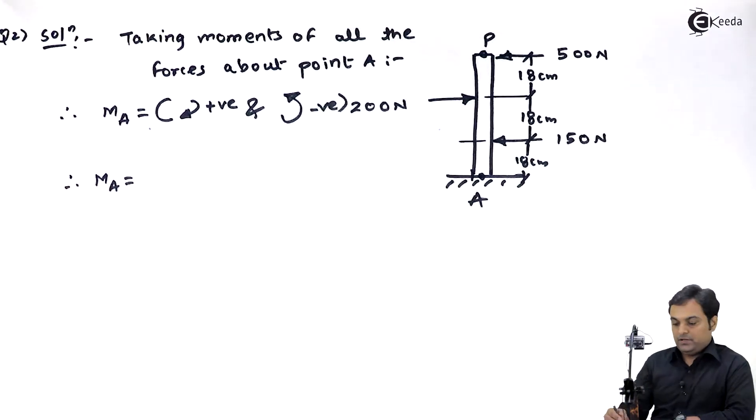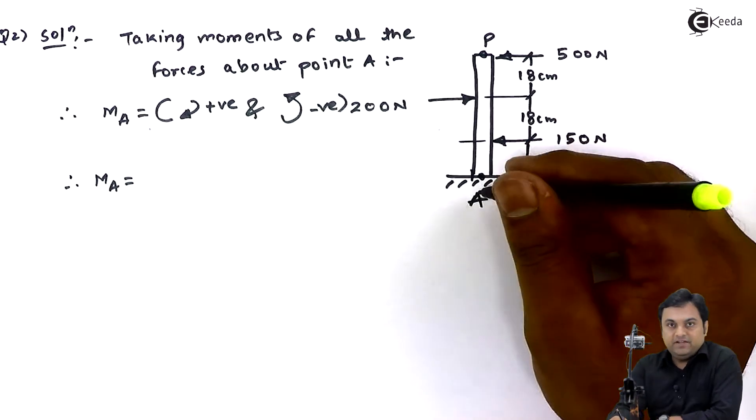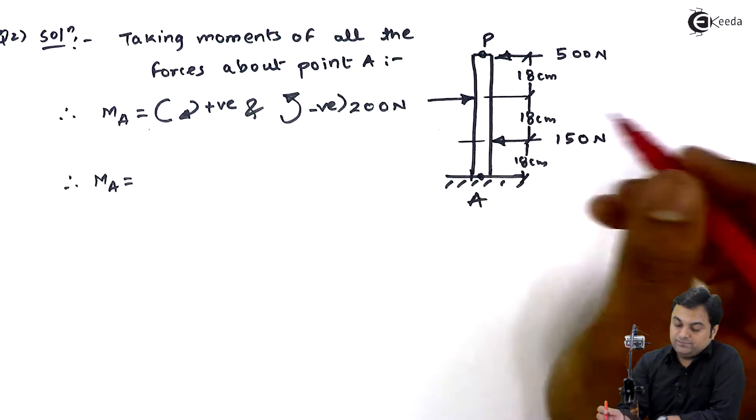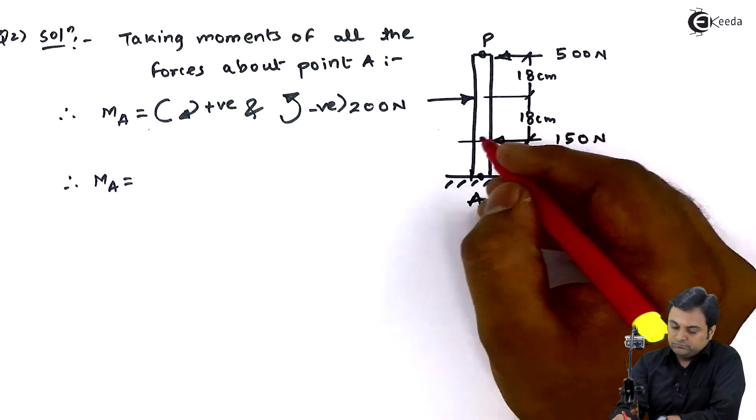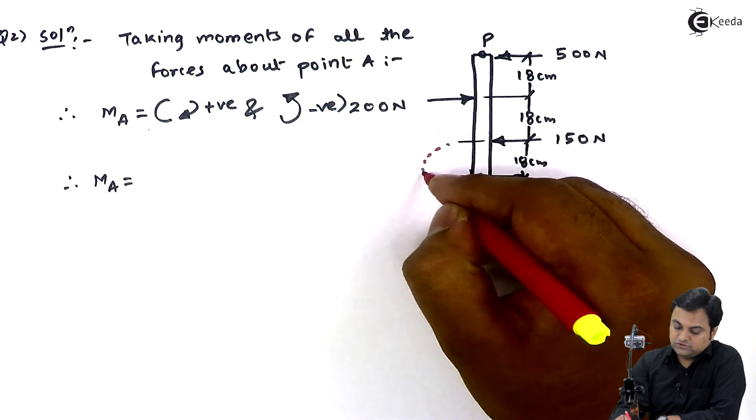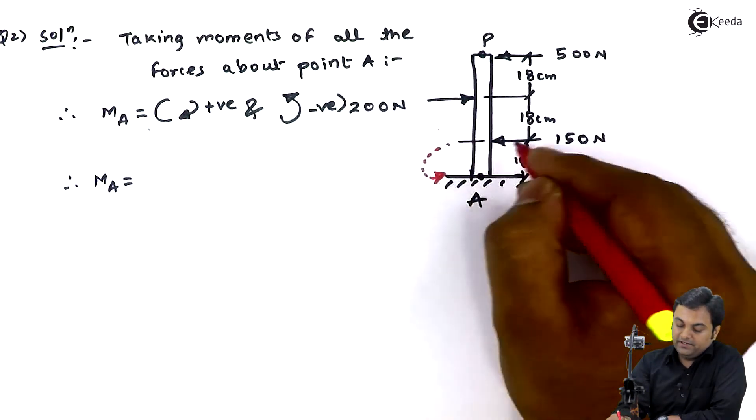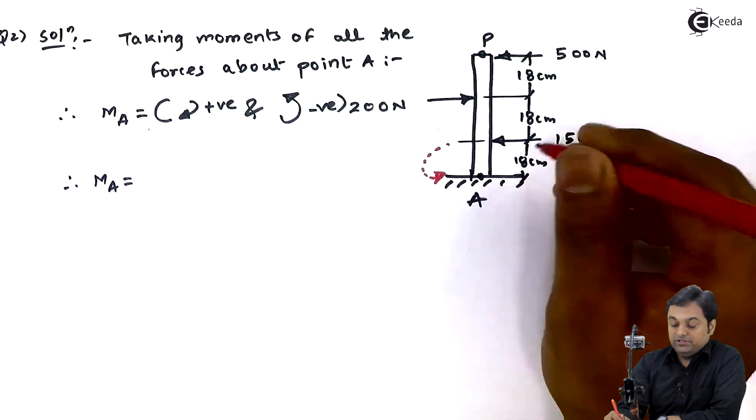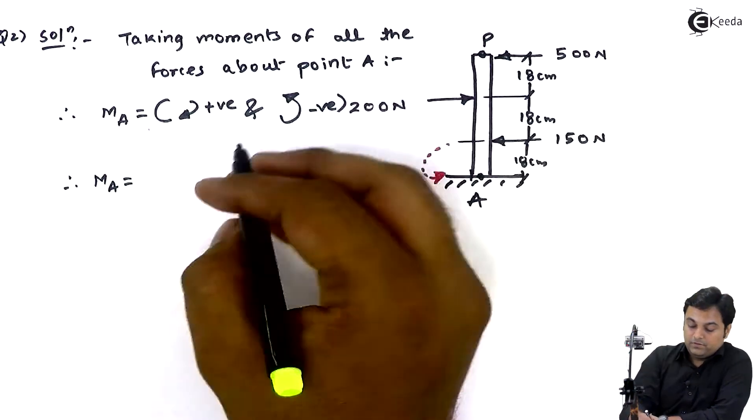First at point A, I will consider 150 Newton acting towards left. The moment produced would be in anti-clockwise direction, that is force into perpendicular distance, so it will be minus 150 into 18.